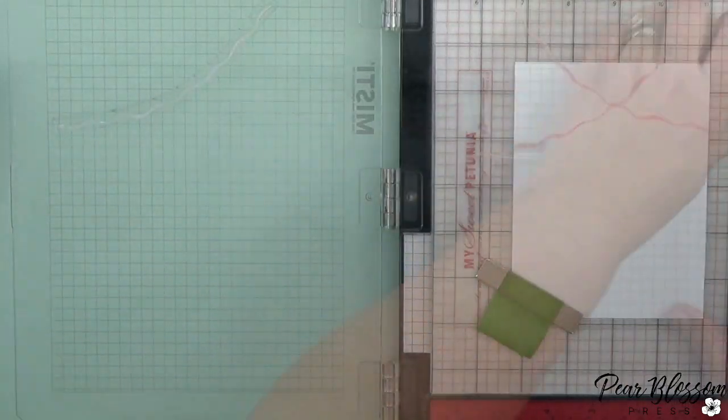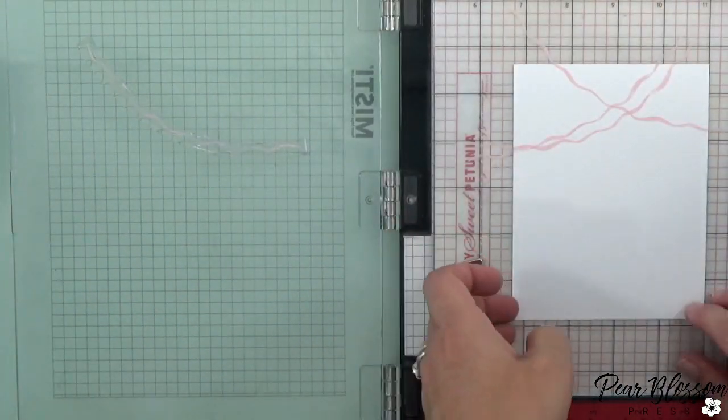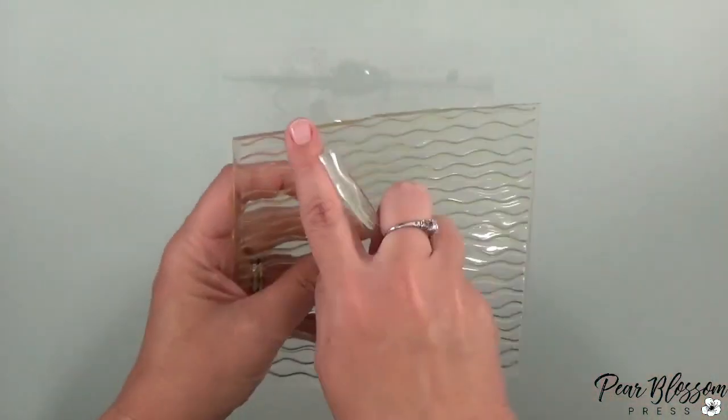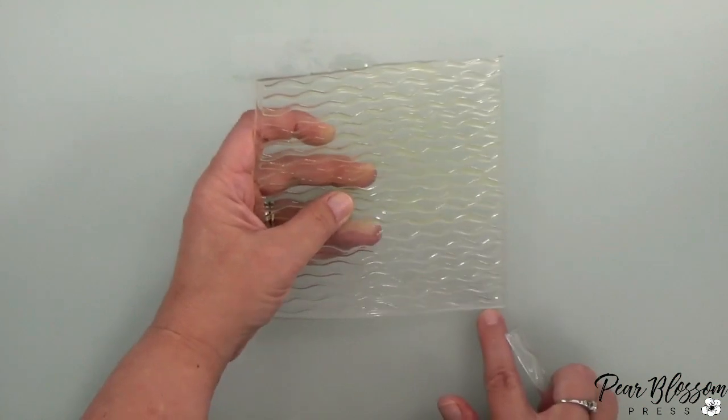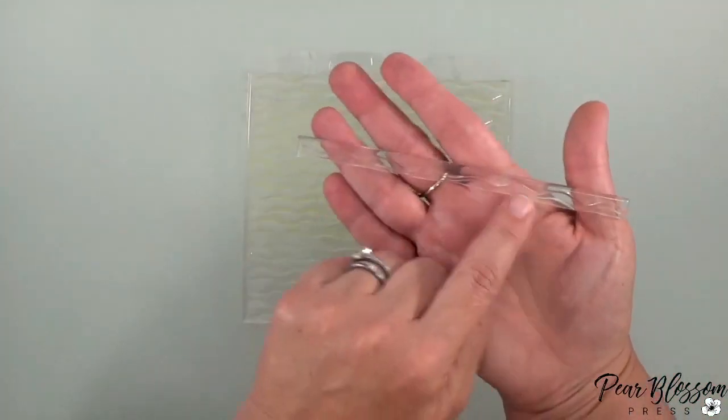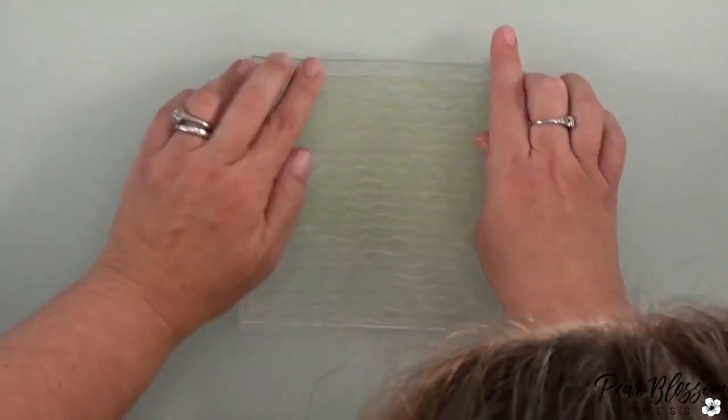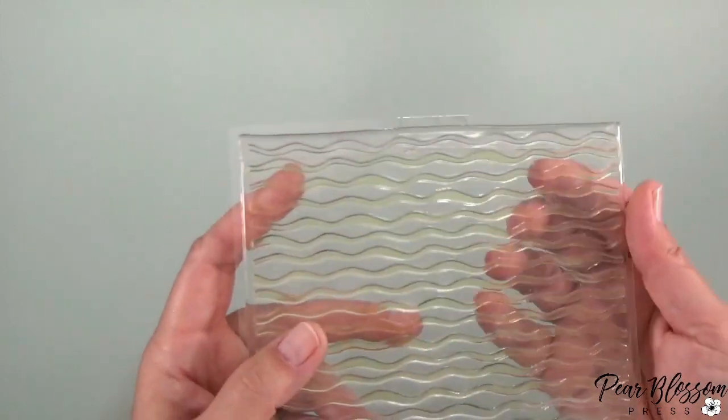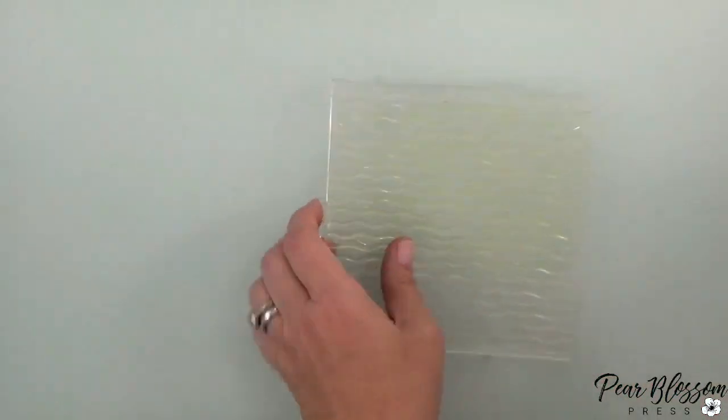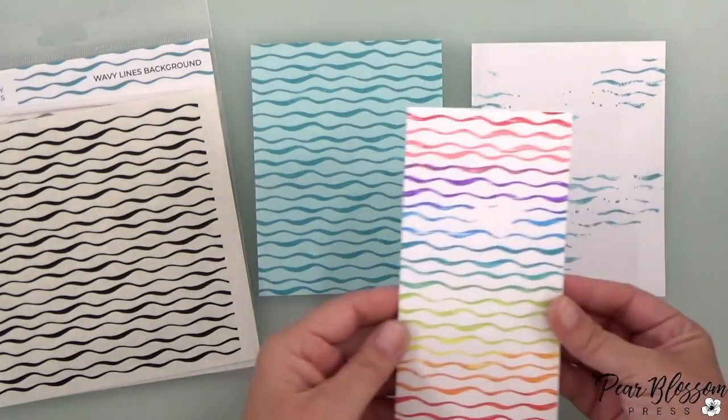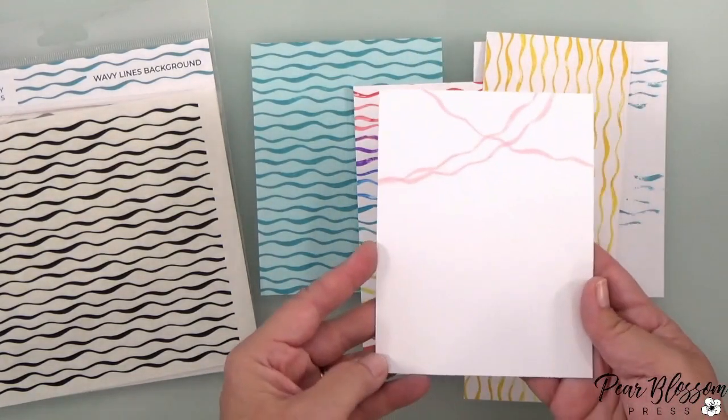And then we can put our stamp back together. And I just want to show you the cut edge at the top there and the cut edge at the bottom of that wave—they will line back up perfectly. So you can do this in your MISTI, or just on the acetate there. But when you do that in your MISTI and stamp it again, it'll stamp like it's one complete stamp again. So I'm never afraid of stamp surgery, but I know that some people are.